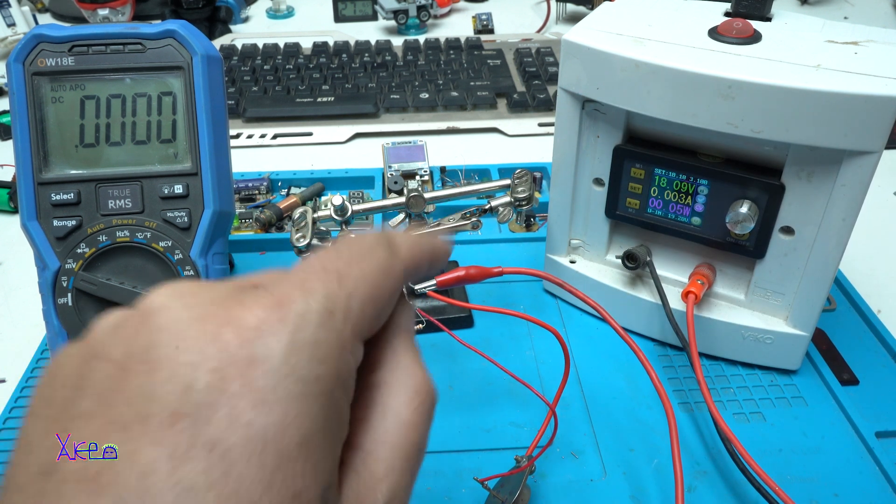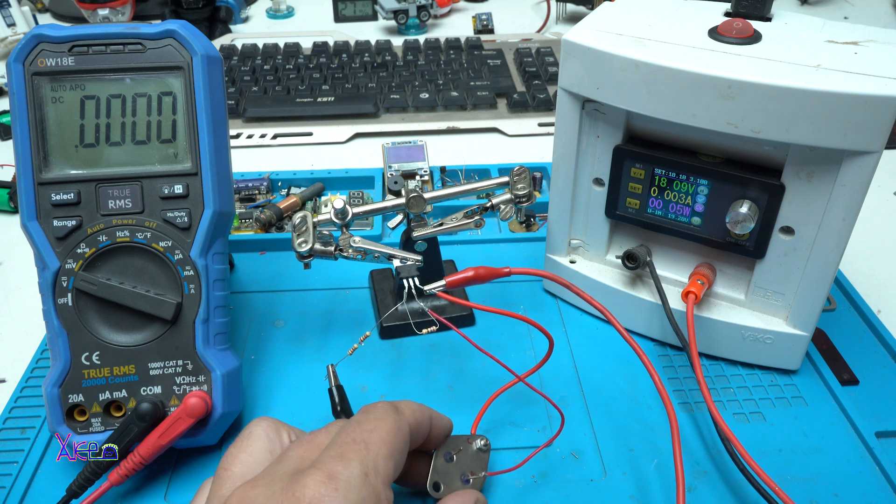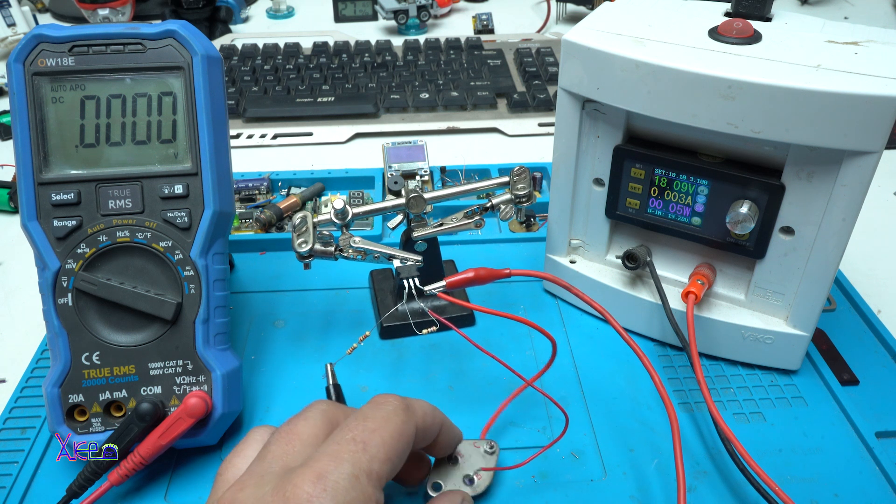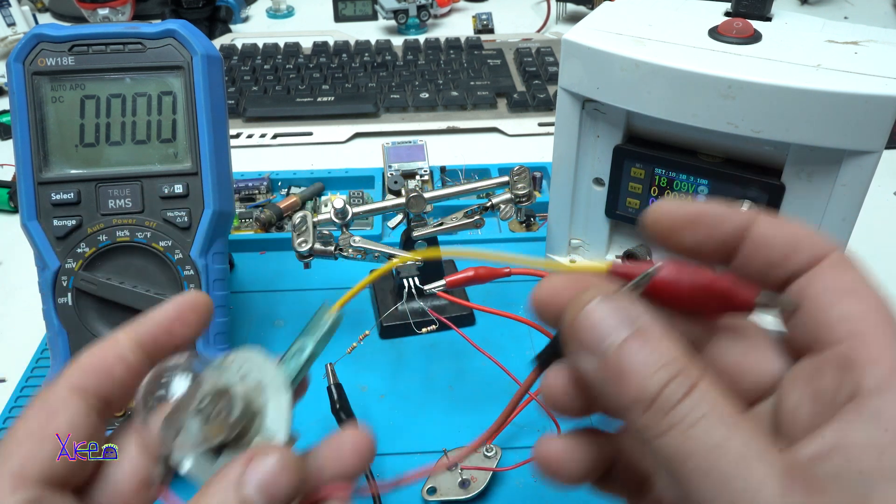18 volts coming in into the circuit. And remember that on the N-P-N transistor the output pin is the emitter. Here it is my testing bulb.